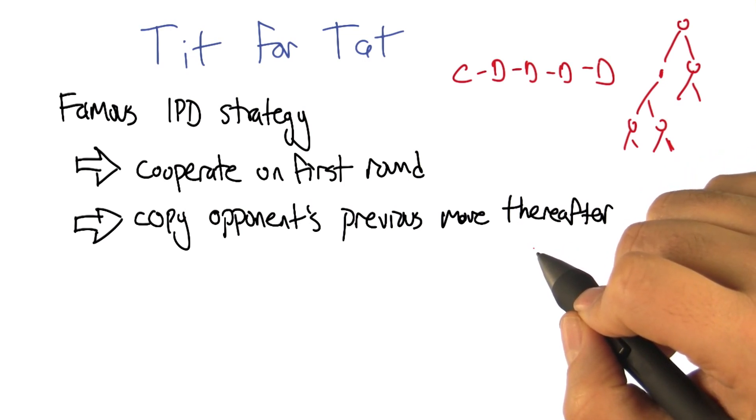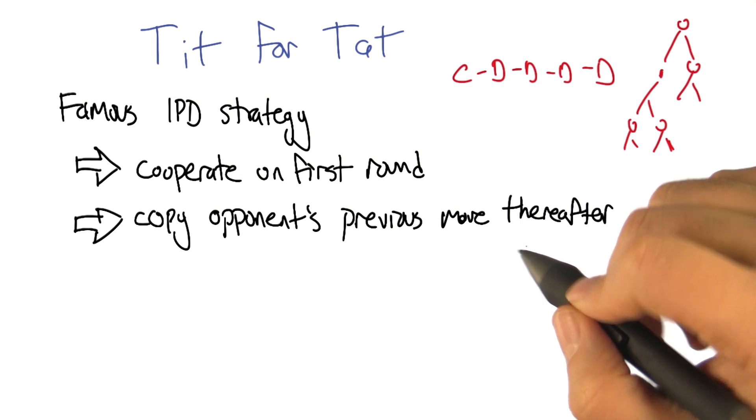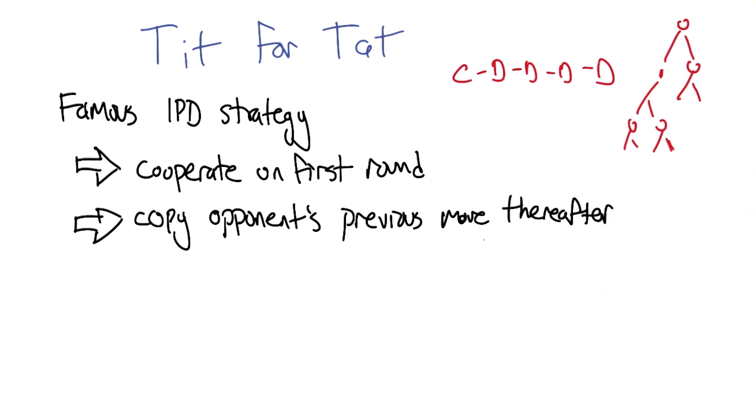So basically we start, I start out acting as if you're going to cooperate with me. And the moment you don't cooperate with me, I will start to defect and we'll be in the old style prisoner's dilemma.